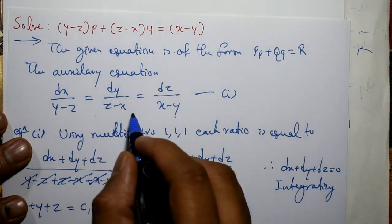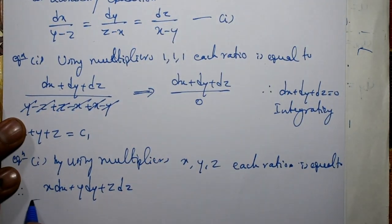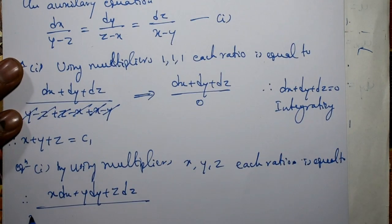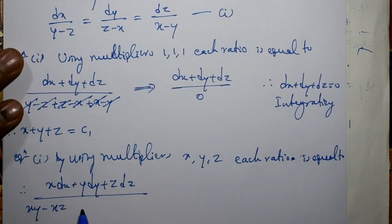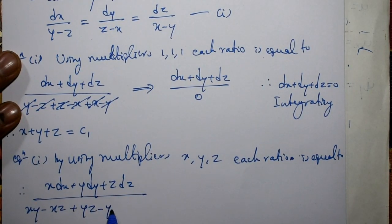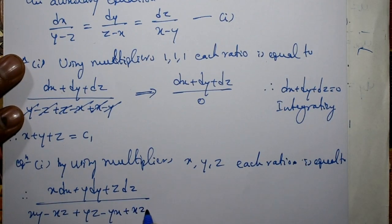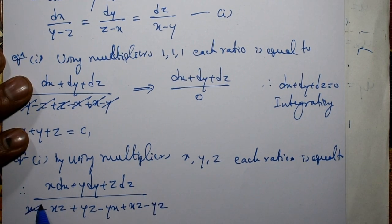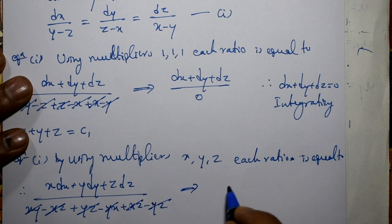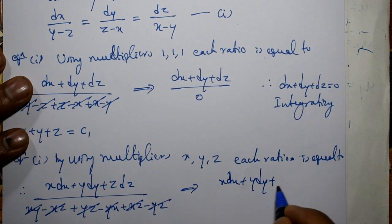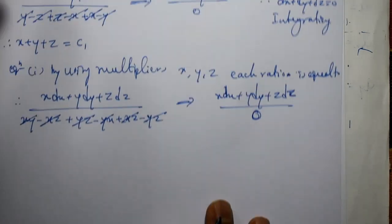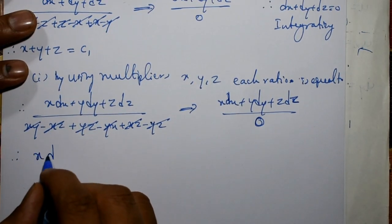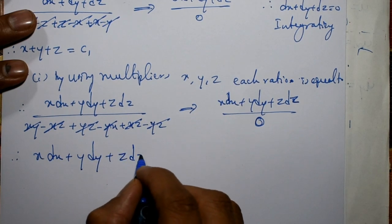Multiply by x: we get x(y minus z), that is xy minus xz. Multiply by y: we get yz minus yx. Multiply by z: we get xz minus yz. Adding these — plus xy minus xy, minus xz plus xz, plus yz minus yz — the denominator becomes 0. Therefore x dx plus y dy plus z dz equals 0.